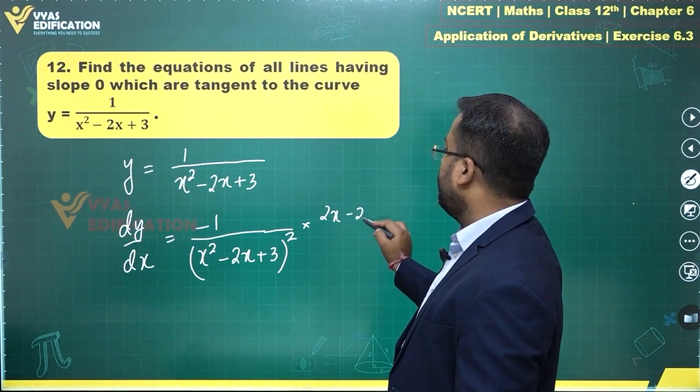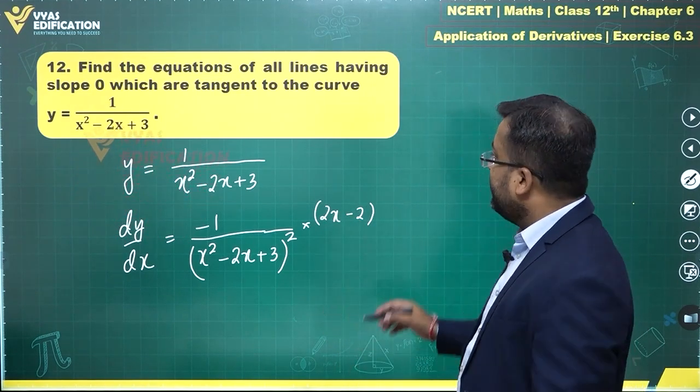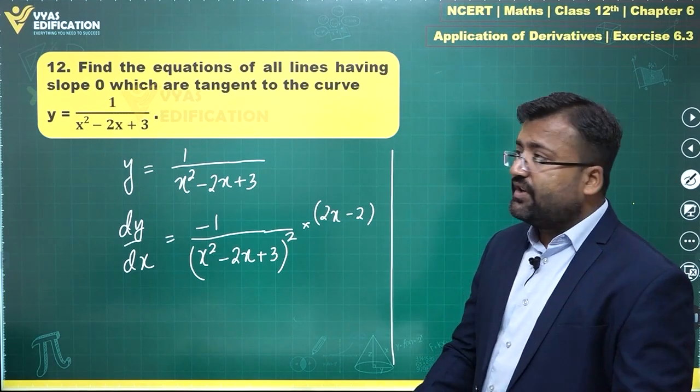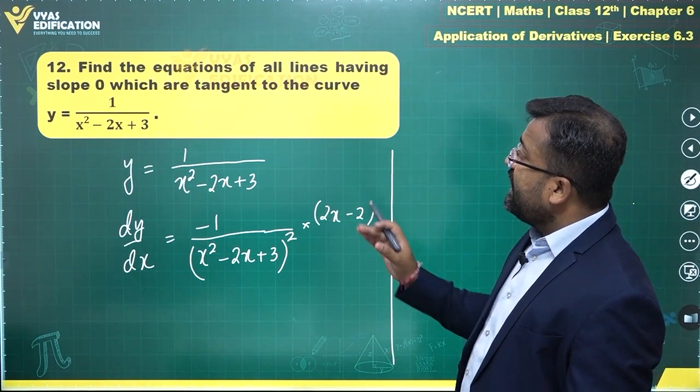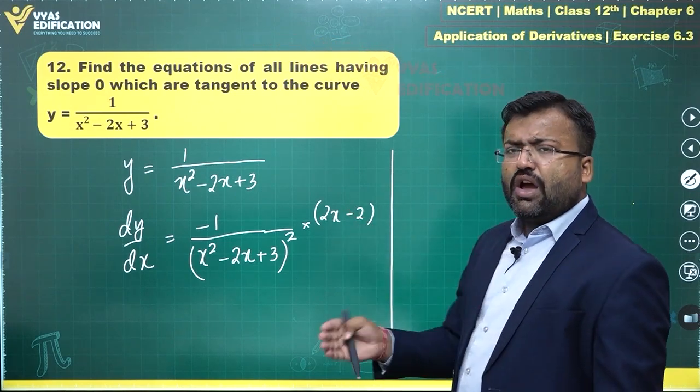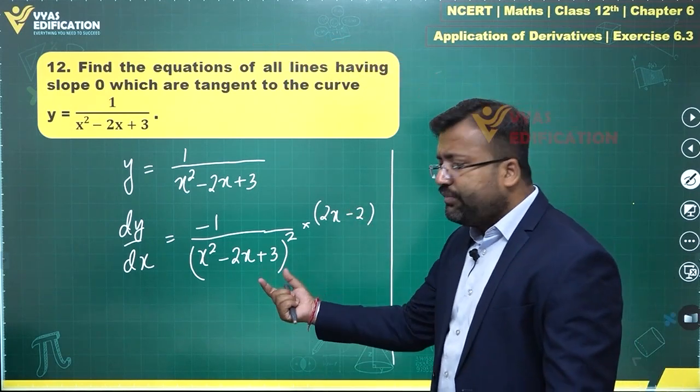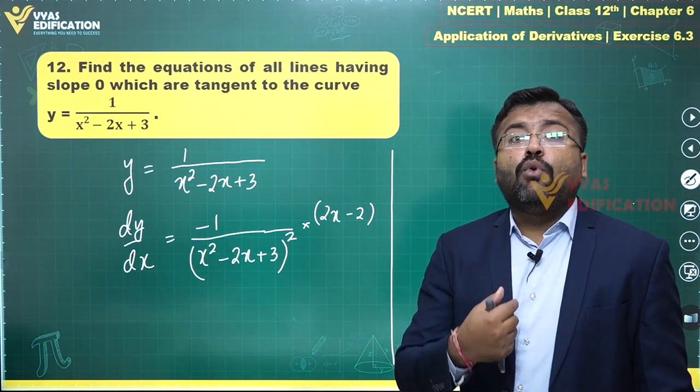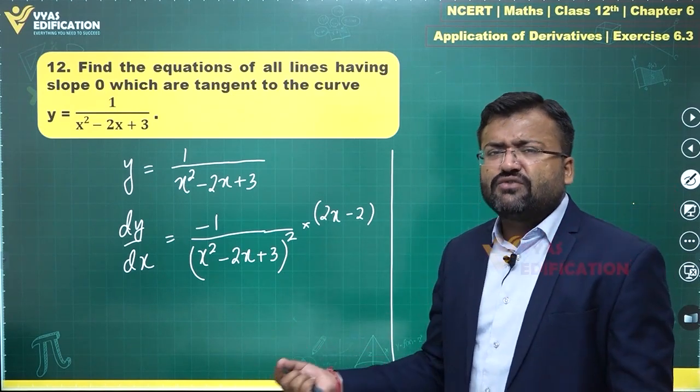This is the derivative. The question further says find the equations of all lines having slope 0 which are tangent to the curve. So equating this slope to 0, we get the point—that is, the value of x first and the corresponding value of y.